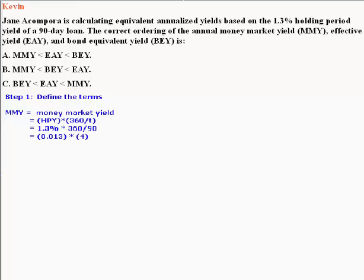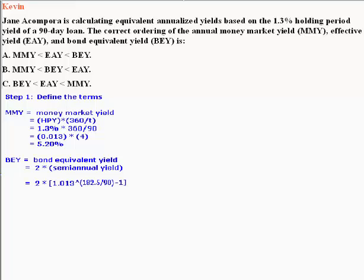This reduces to 5.2%. In the case of Bond Equivalent Yield, BEY, this is simply equal to 2 times the semiannual yield. Since we're compounding at a semiannual rate, this becomes 2 times the HPY at 1.013 to the power of 182.5 days divided by 90, minus 1.